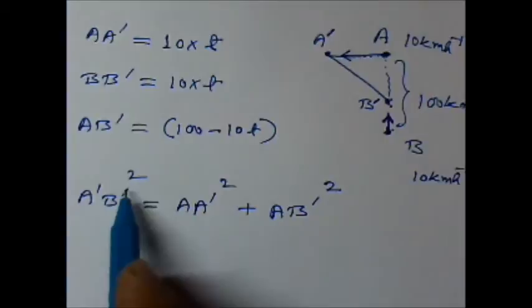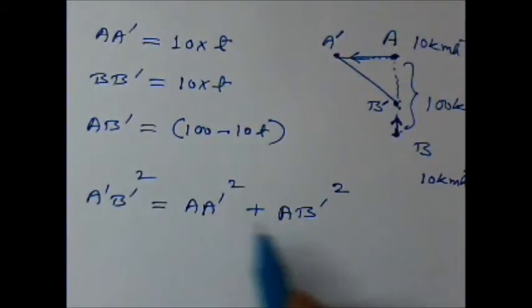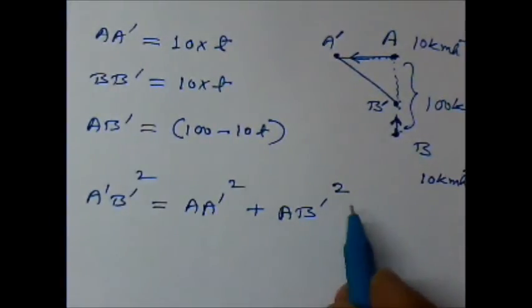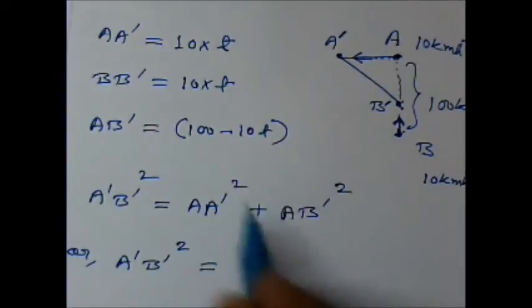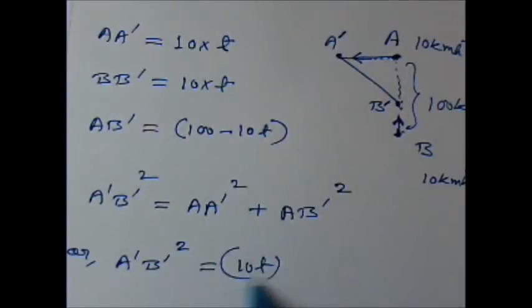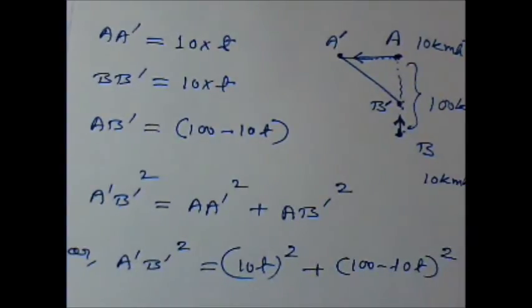So this will give me A dash B dash squared equals AA dash, that is 10T whole squared, plus AB dash, that is 100 minus 10T whole squared.